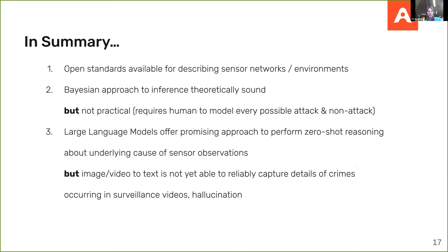In conclusion, open standards are available for describing sensor networks and environments to capture context, which is still very important to support reasoning. Bayesian approaches to inference are theoretically sound for simple examples, but in practice require the human to model every possible attack, non-attack, and observation. Large language models appear promising from our initial exploration, but our work hasn't yet been peer-reviewed, and our attempts to fully automate the process — including the video-to-text stage — introduce problems: the video-to-text step can't reliably capture crime details, and hallucination leads to incorrect final conclusions.